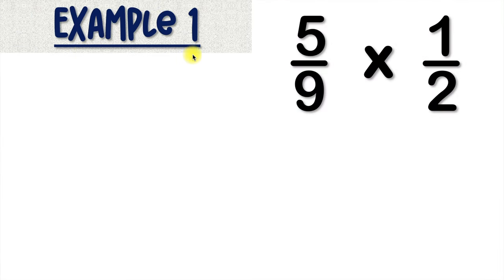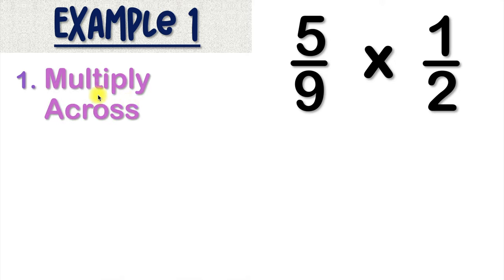Here's our first example. We have 5 over 9 times 1 over 2. Our first step is to multiply across. That means first, we'll multiply our numerators. And that will give us the numerator for our answer. And then we'll multiply the denominators. And that answer will give us the denominator for our answer.